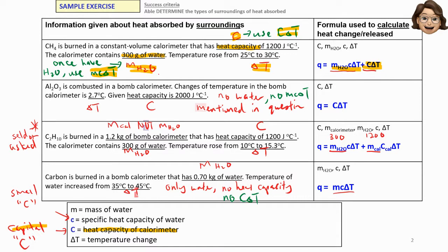In this calorimeter there are two things that absorb heat: the water and also the calorimeter itself. Now looking at the second question — a substance is combusted in the calorimeter, it gives us change of temperature and heat capacity, but the word 'water' is not mentioned. If there's no water mentioned, we do not write MC∆T — we have only C∆T.